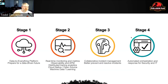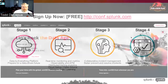This is not meant to be a maturity model, but it's something I've found helpful in conversations. Starting on the left, Stage One is about data and everything platform. Stage Two is about real-time monitoring, metrics, and observability — open tracing and distributed tracing all being in Stage Two. Stage Three is where you start thinking about collaborative incident management — how to better prevent and resolve incidents. Stage Four is where the big value comes: leveraging all that data and all the results to get to automated orchestration and response, both from a security and IT perspective.